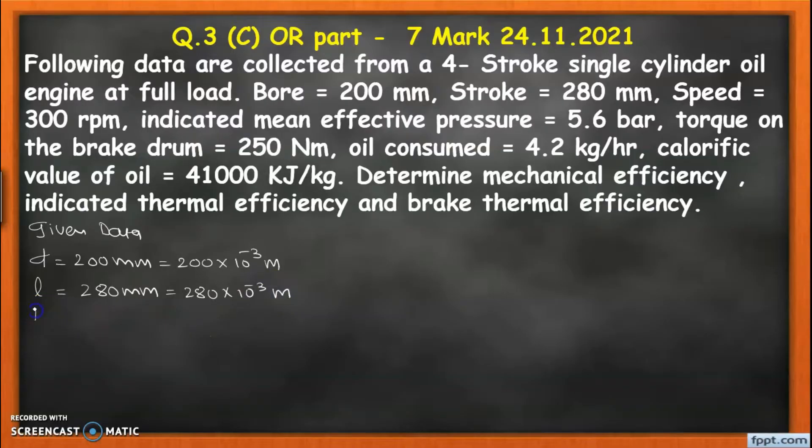Speed means number of rpm is given, that is 300 rpm. Then the mean effective pressure, Pmi, is given, that is 5.6 bar, which we need to convert into newton per meter square, so 5.6 × 10^5 N/m².